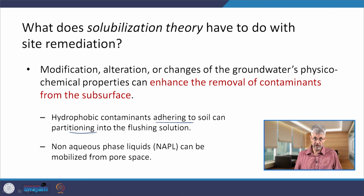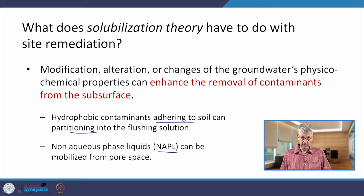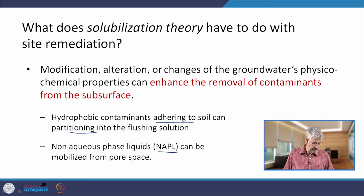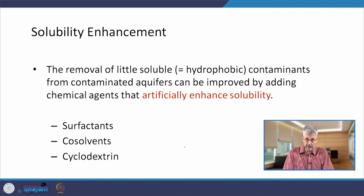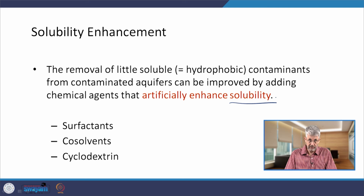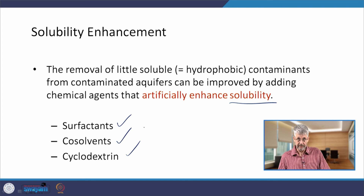We make contaminants partition into the flushing solution. In the case of non-aqueous phase liquids, we can get those NAPLs mobilized from the pore space where they may be trapped as immobile residual. Solubility enhancement — the removal of poorly soluble hydrophobic contaminants from the contaminated aquifer by artificially enhancing their solubility — can be achieved with surfactants, co-solvents, and cyclodextrins. All three enhance the solubility of contaminants.